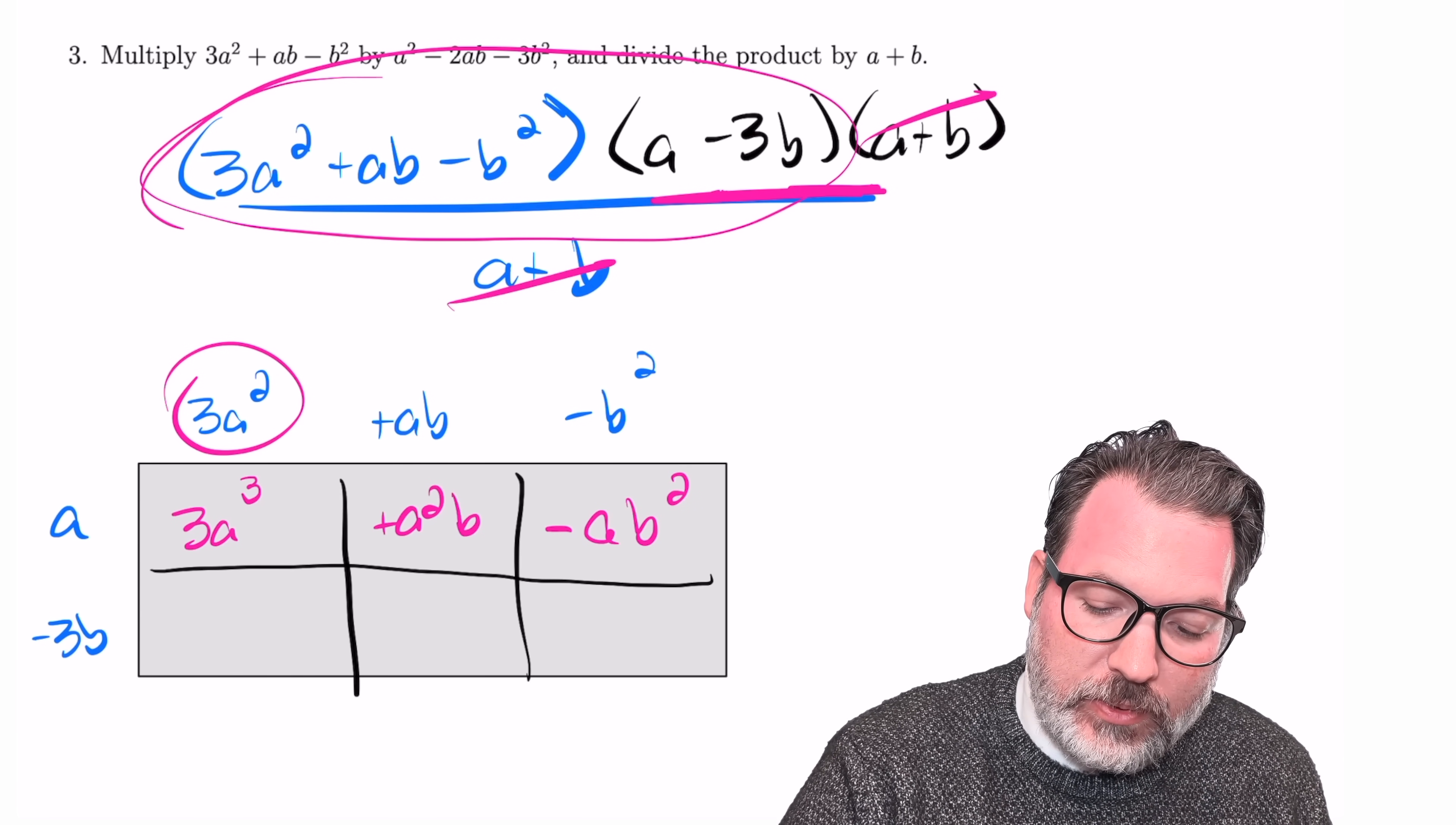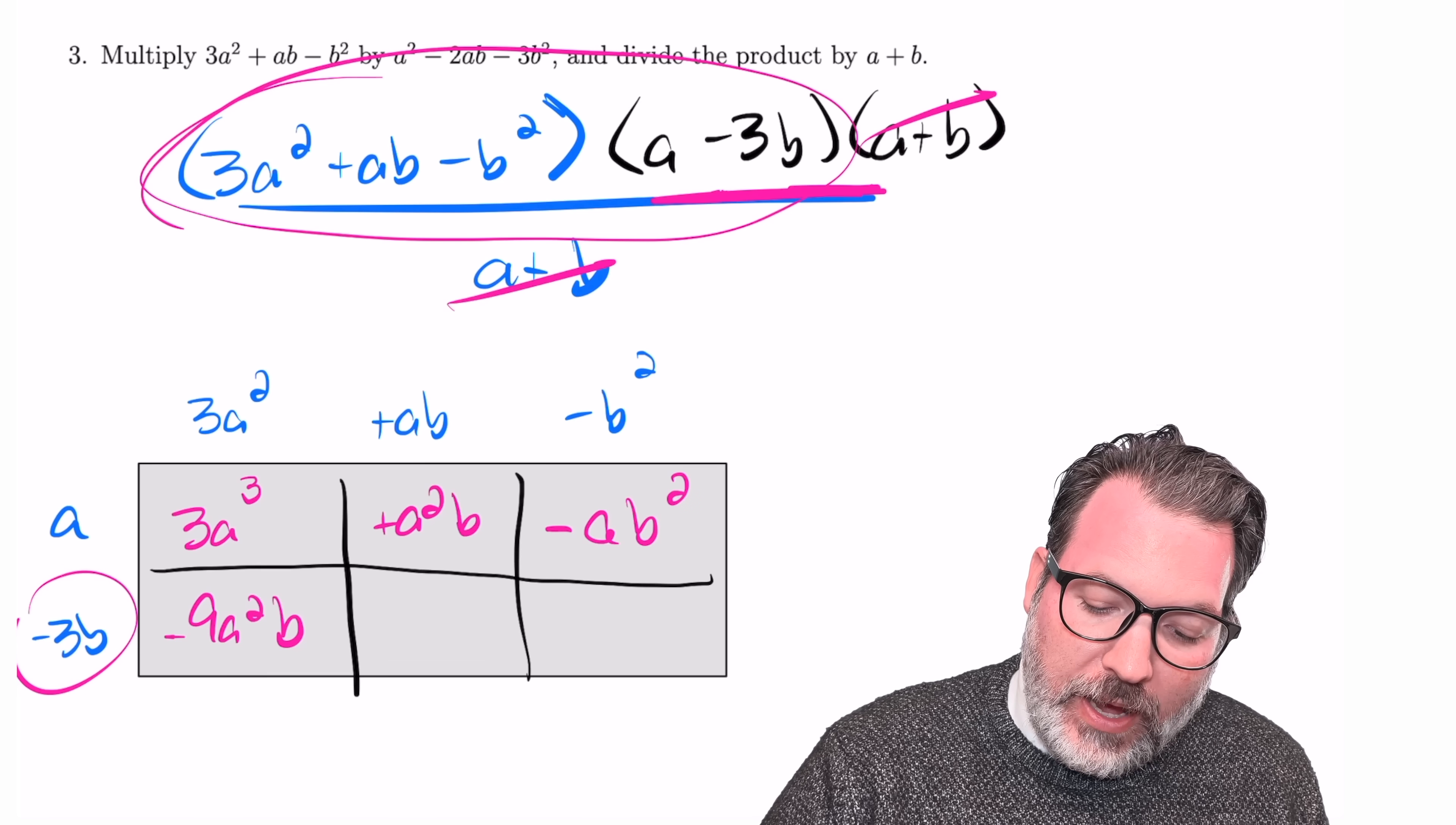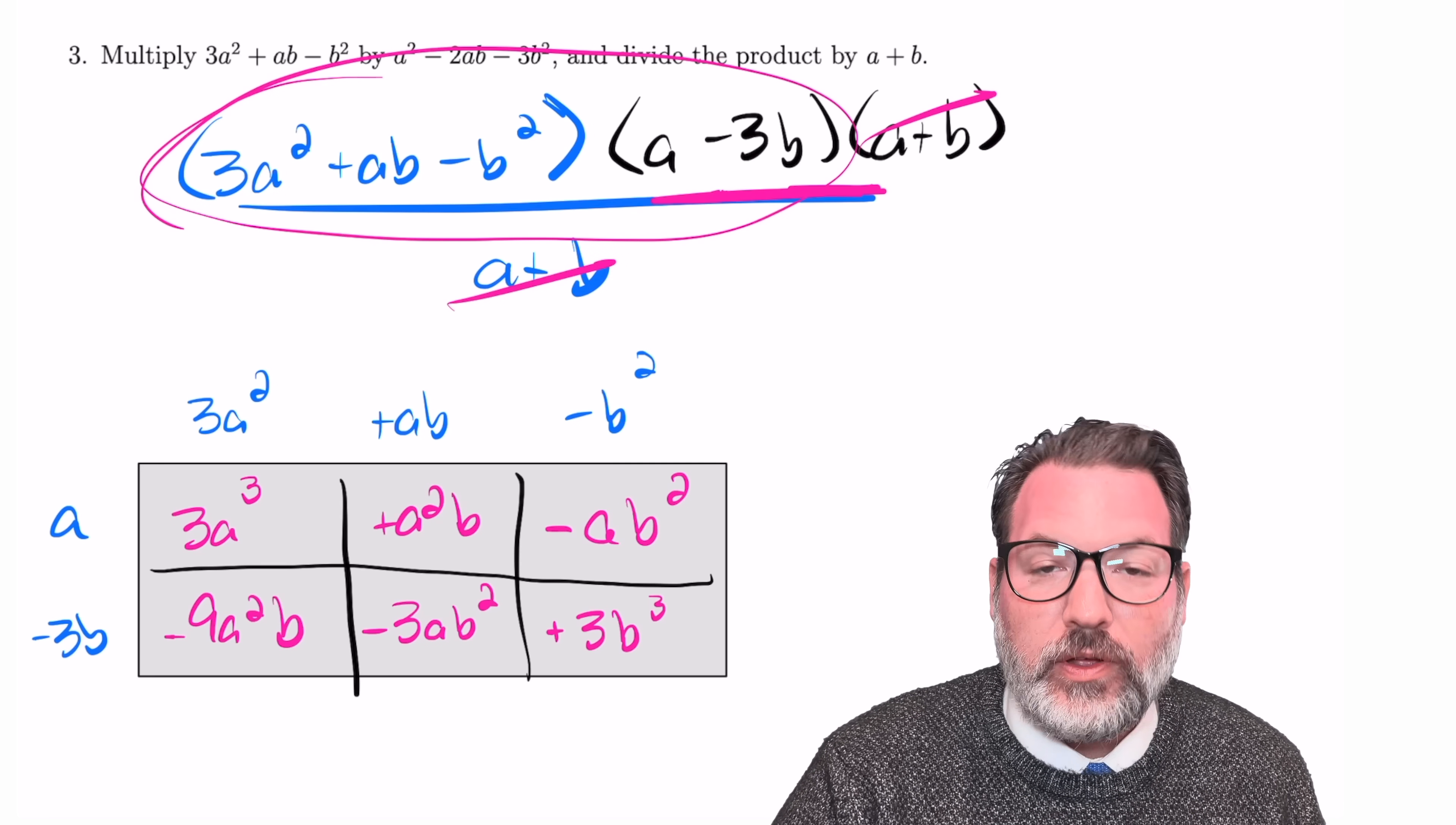3a squared times negative 3b, that makes negative 9a squared b, and I can already see, oh, I'm going to have like terms on these diagonals, just like we did earlier that I'm going to be able to add together to come up with my final product. Negative 3b times positive ab is going to give us back negative 3ab squared, and again, I notice some like terms along that diagonal, and finally negative 3b times negative b squared is positive 3b cubed.